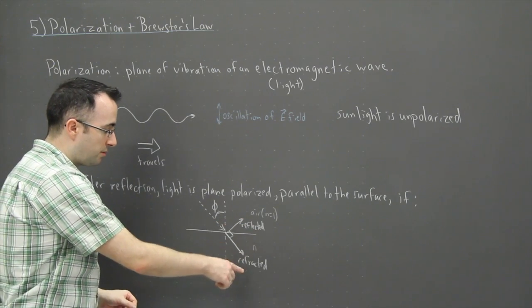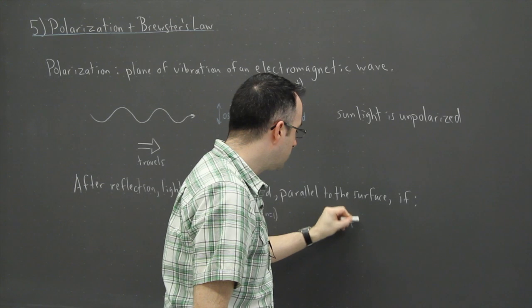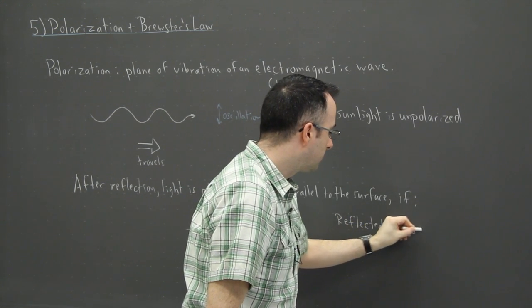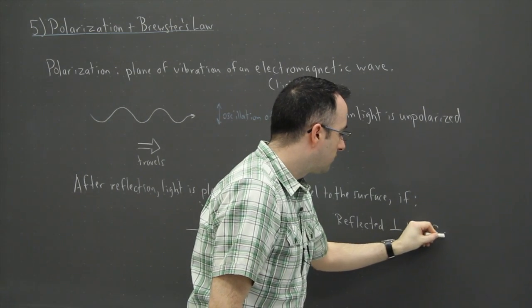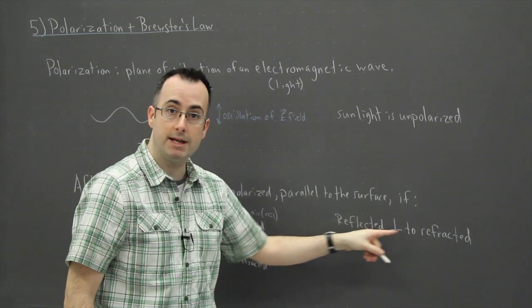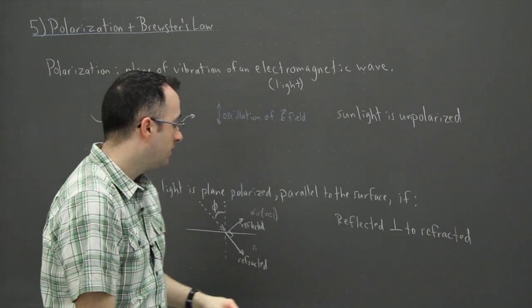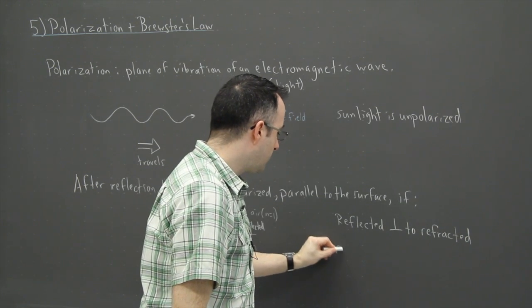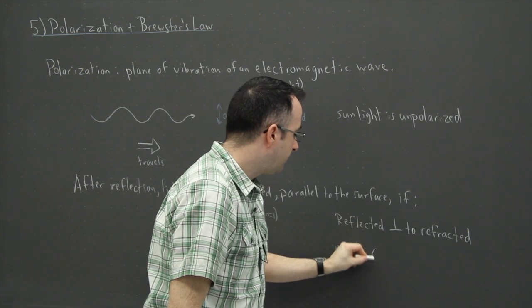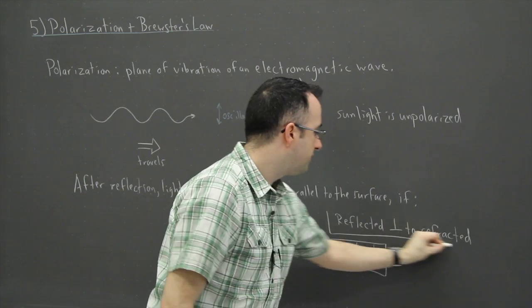So if reflected, I'm going to write this symbol right here, that means reflected is perpendicular to refracted. In other words, they're at an angle of 90 degrees to each other. And we have this situation right here, that n has to equal tangent of phi. So these two things, if those happen, well it turns out this means this, but this is actually known as Brewster's Law.